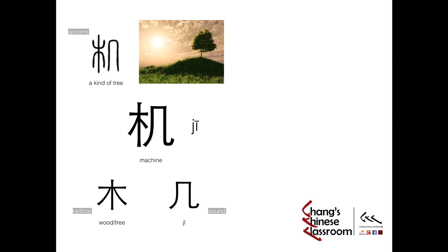The structure is quite simple: the left part is the radical — wood. And the right part: you know this one — Ji, meaning 'how many,' just contributing to the sound, Ji. It's the same initial and final, just the only difference is the tone. Pay attention to the tone.